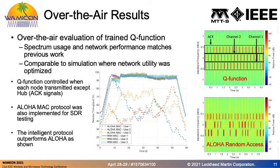Using our software-defined radio, we collected the over-the-air results shown here. The version tested consisted of three users and two frequency channels; the third channel visible in the spectrograms is dedicated to the hub for acknowledgement transmissions. We took the dynamic spectrum access model trained in simulation and used it to control when each user transmitted — the spectrogram is shown in the upper right. We also implemented the Aloha Random Access MAC protocol for comparison, shown in the bottom right spectrogram. The spectrogram for the trained dynamic spectrum access model is much more organized and results in better throughput, outperforming the Aloha MAC protocol for each user.